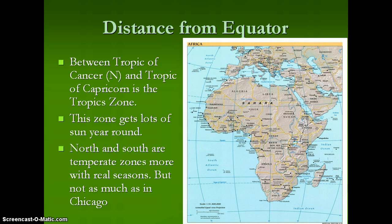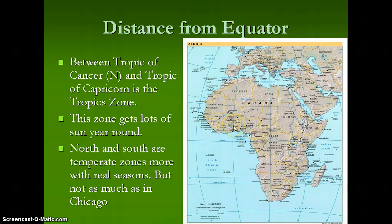The distance from the equator is important, and most of Africa is part of the tropical zone — from the Tropic of Cancer to the Tropic of Capricorn. Most of it is in this tropical zone; it's temperate to the north and to the south, and the equator runs right through it. This means it gets lots of sun all year round, while the temperate zones have more distinct seasons.